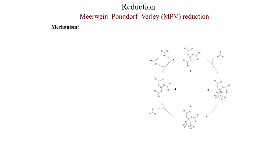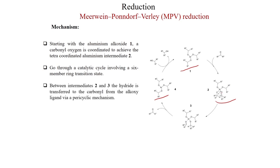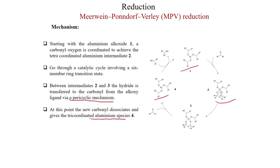The mechanism is similar to Oppenauer oxidation. The aluminum trialkoxide species is formed, then the ketone binds to the aluminum. Starting from aluminum alkoxide, the carbonyl oxygen coordinates to achieve the tetra-coordinate aluminum intermediate 2. After that, going to a 6-membered cyclic transition state similar to Oppenauer oxidation, hydride delivery takes place and the ketone goes to an alcohol.